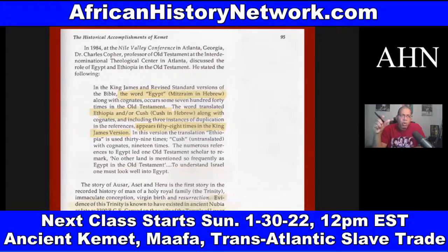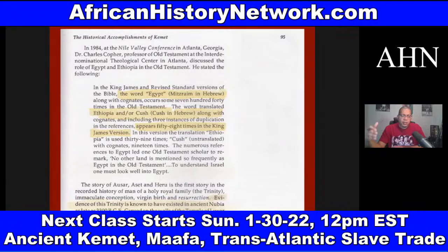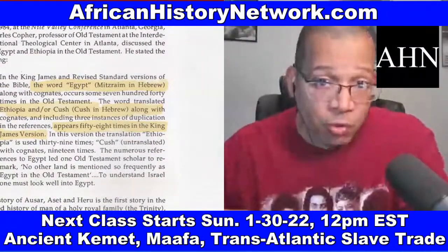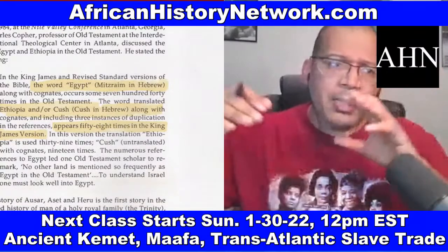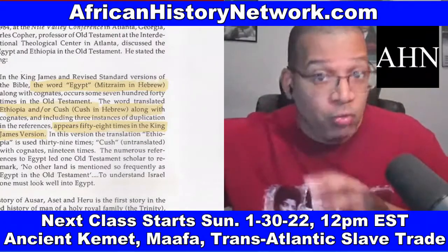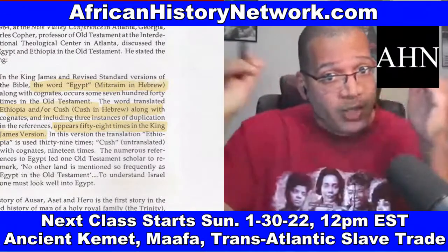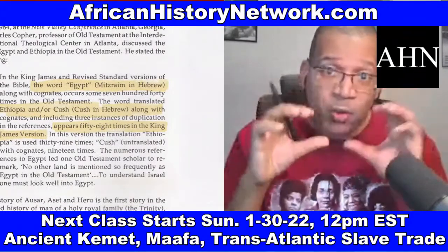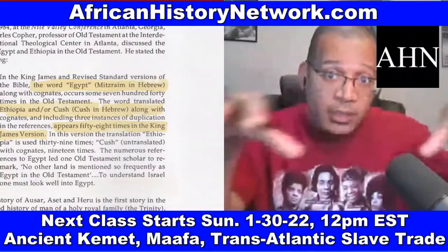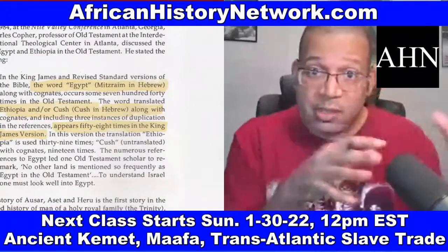The word translated as 'Ethiopia,' and also 'Cush' in Hebrew, along with cognates, appears 58 times in the King James Version. Anyone who reads the Bible — the Helios Biblos — should get a study Bible rather than a devotional Bible, because a devotional Bible is about 400 pages while a King James International Study Bible is 2,000 pages, with language references, translations, and far more information to understand what is actually being discussed.